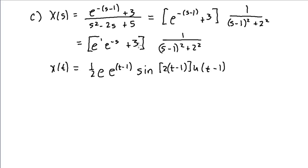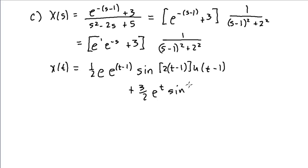Similarly, the second term — the plus 3 times this expression — again requires a 2 in the numerator, so I write this as 3 halves. The second term becomes 3 halves times e to the t times sine of 2t times u of t, with no delay. I skipped a few steps there, so you may want to work through that yourself to verify this is the correct result.